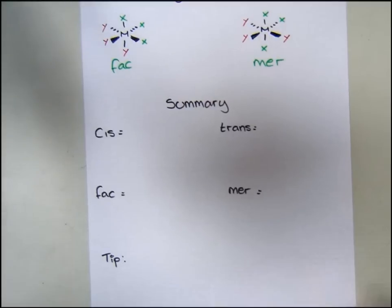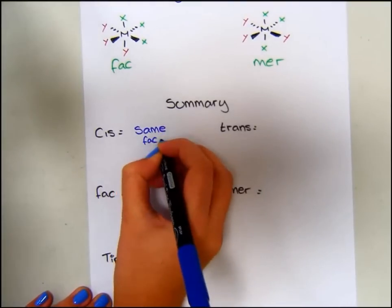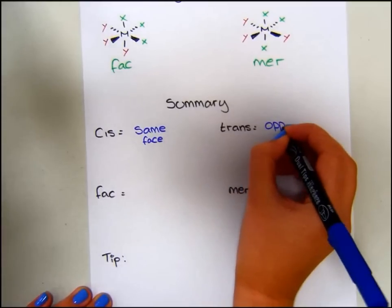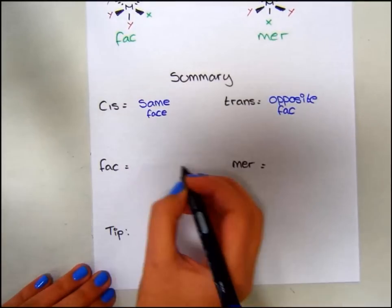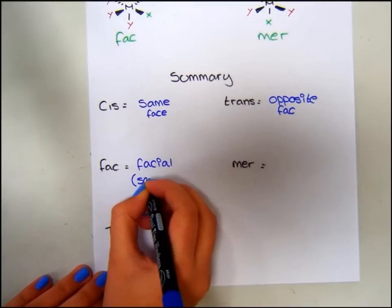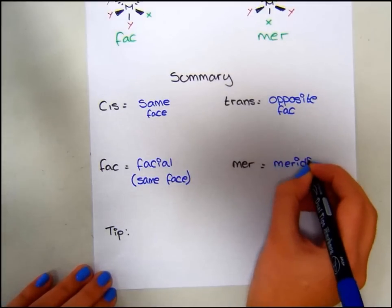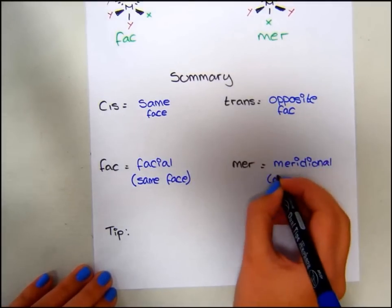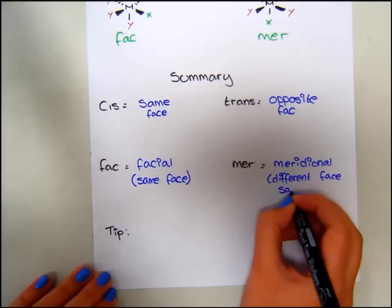To summarize, we can give a few brief definitions of cis, trans, fac and mer. Cis basically means same face, whereas trans is the opposite face. And fac is facial, which means same face. And mer is meridional, which is different face, however same plane.